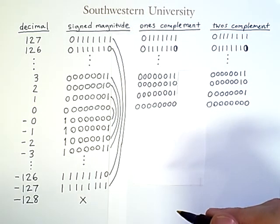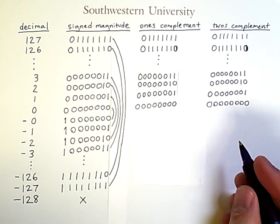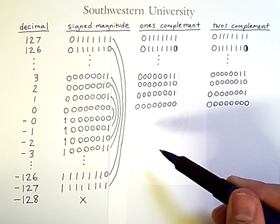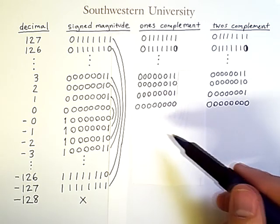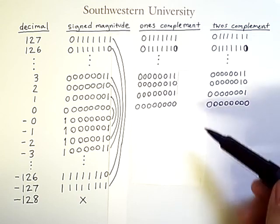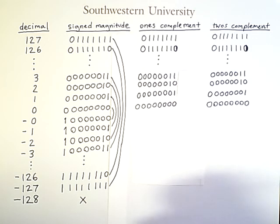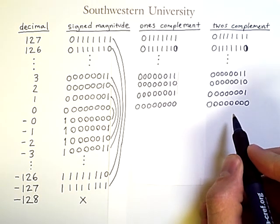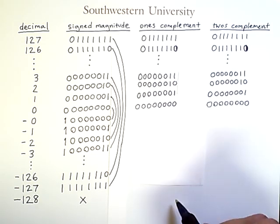However, this format is not easier for computers to deal with, which is why two's complement exists. We need to do some work to write out the negative number representations for both one's complement and two's complement. The positive numbers are already filled in, because they are the same in all three systems. Before we can do any of the two's complement numbers, we need to know the one's complement representations, so let's fill that column out first.